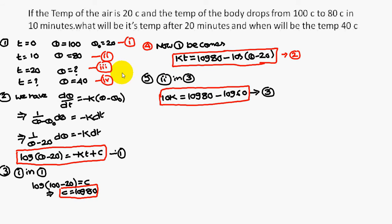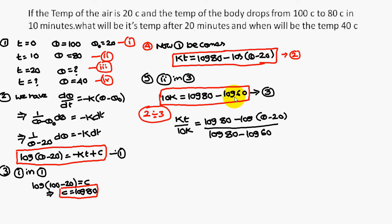For the second equation, we substitute t equal to 10 into the equation. Therefore, 10k is equal to log 80 minus log(theta minus 20), and substituting theta equal to 80 gives 80 minus 20 equals 60, so 10k is equal to log 80 minus log 60. Developing equations two and three, we get kt divided by 10k equal to (log 80 minus log(theta minus 20)) divided by (log 80 minus log 60).